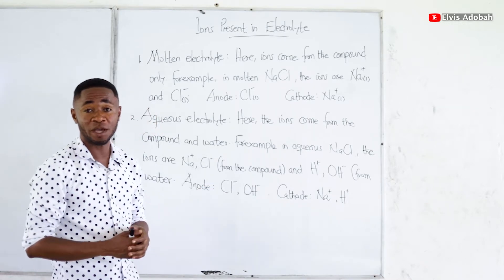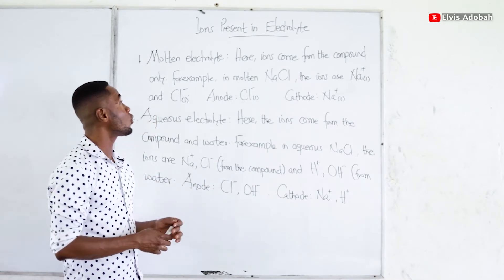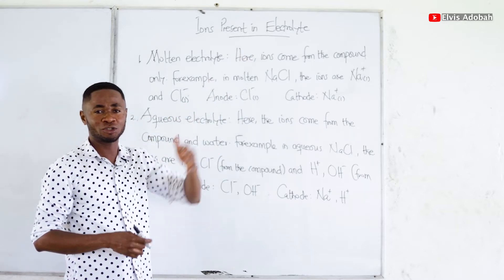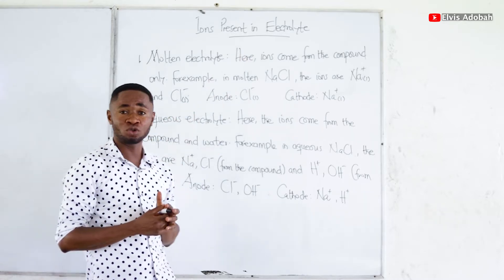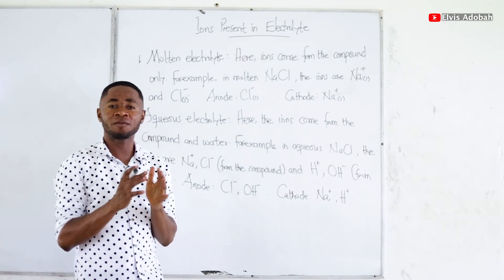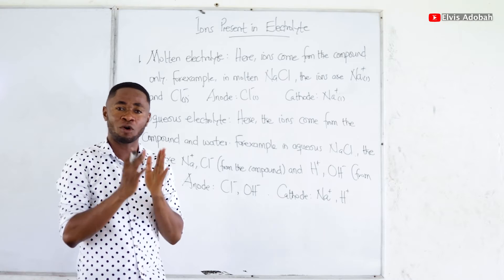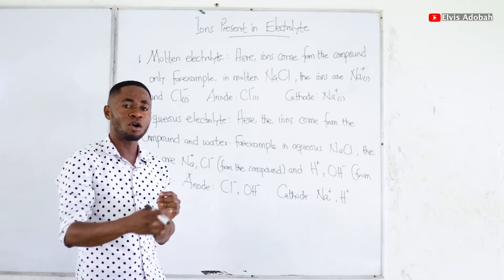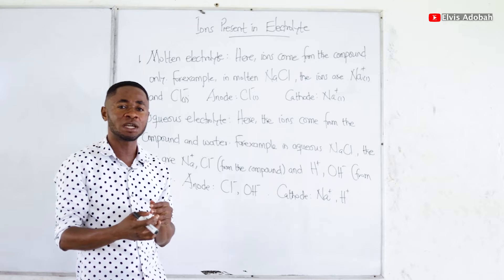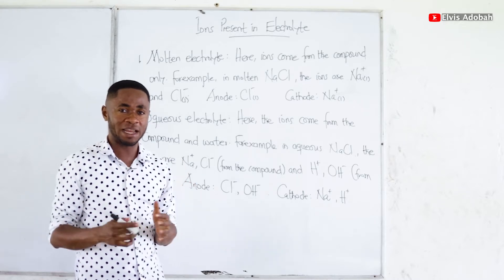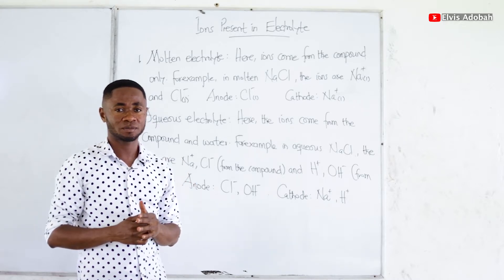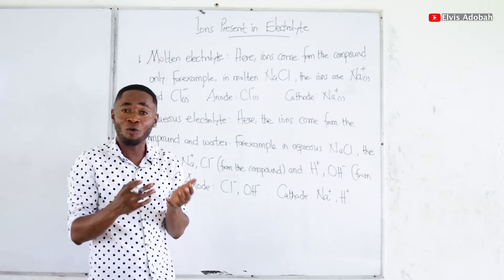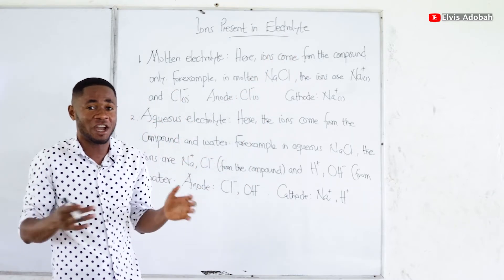Welcome once again students to chemistry. In this video we want to talk about the ions that are present in an electrolyte. In our introduction to electrolysis, we defined an electrolyte as a compound which, when in molten state or in aqueous solution, is able to conduct electricity. That means this electrolyte is supposed to be made up of a compound which is ionic in nature.